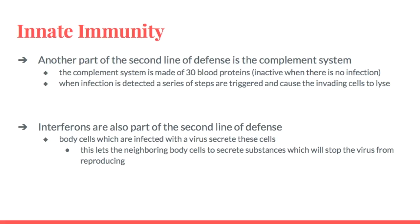A second part of the second line of defense is the complement system, which is made up of 30 blood proteins. These proteins are inactive when there is no infection, but when an infection is detected, a series of steps are triggered that cause the invading cells to lyse, or burst. Interferons are also part of the second line of defense. They are secreted by body cells when infected with a virus, alerting neighboring cells to secrete substances that stop the virus from reproducing.